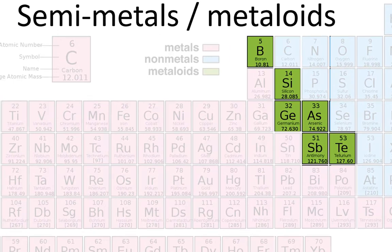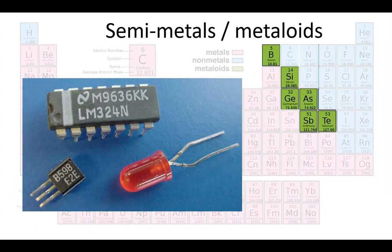The semi-metals are also called the metalloids. They have some properties that are the same as metals and other properties that are like non-metals. The metalloids are very important for making electronic components.